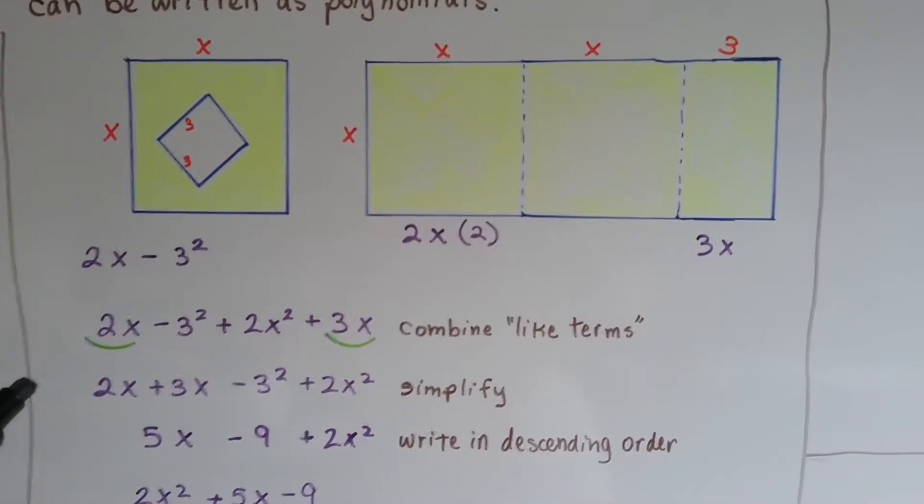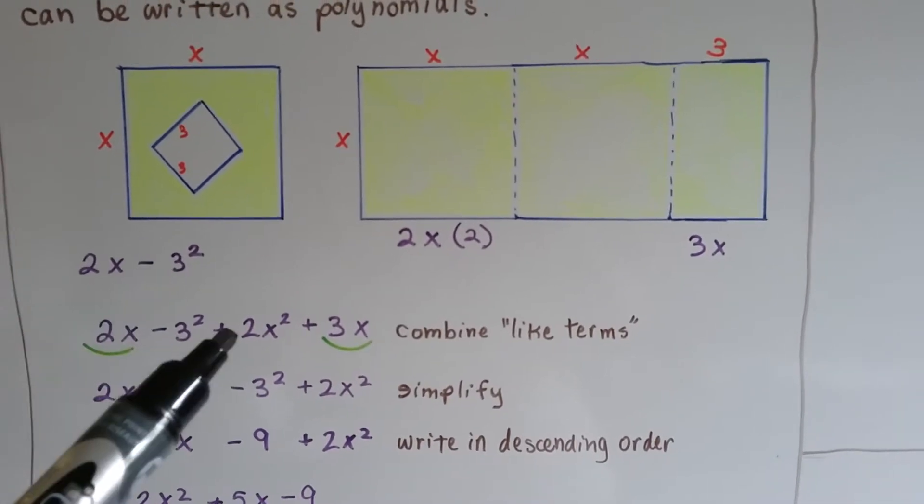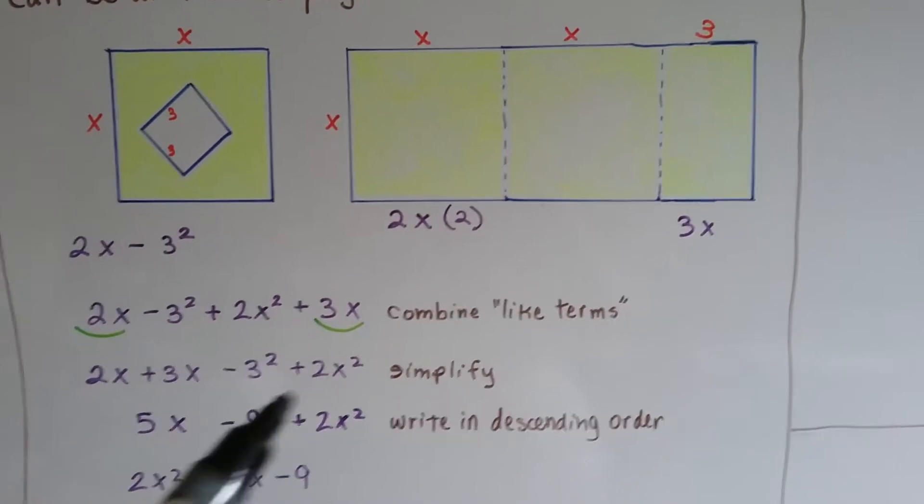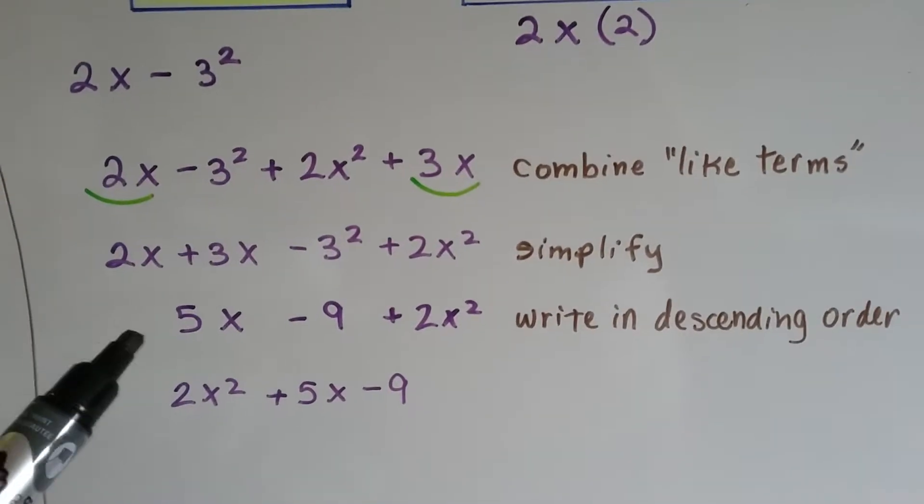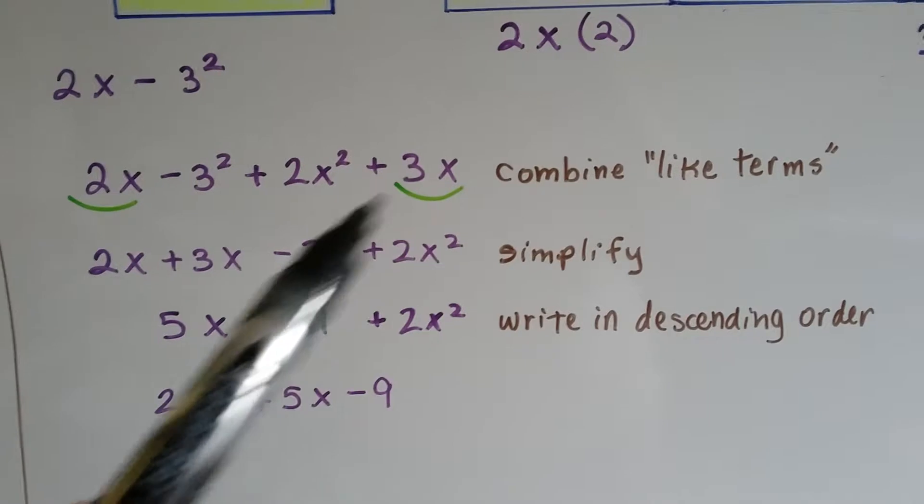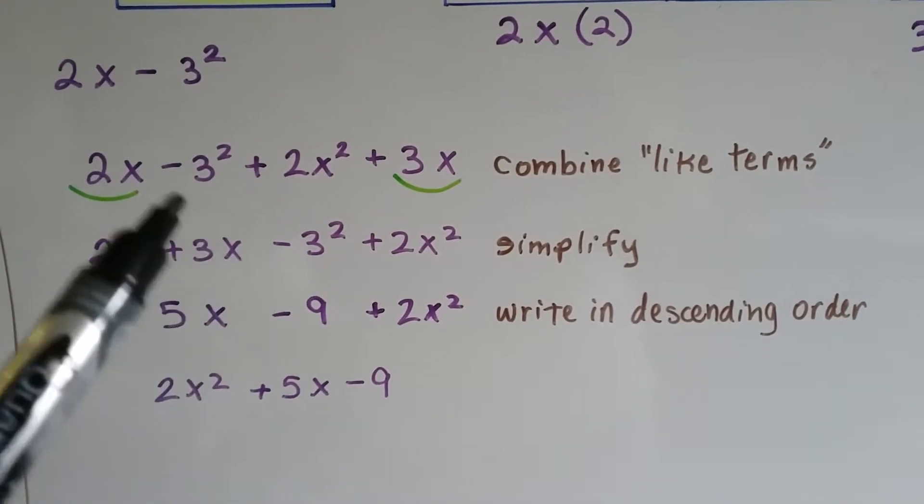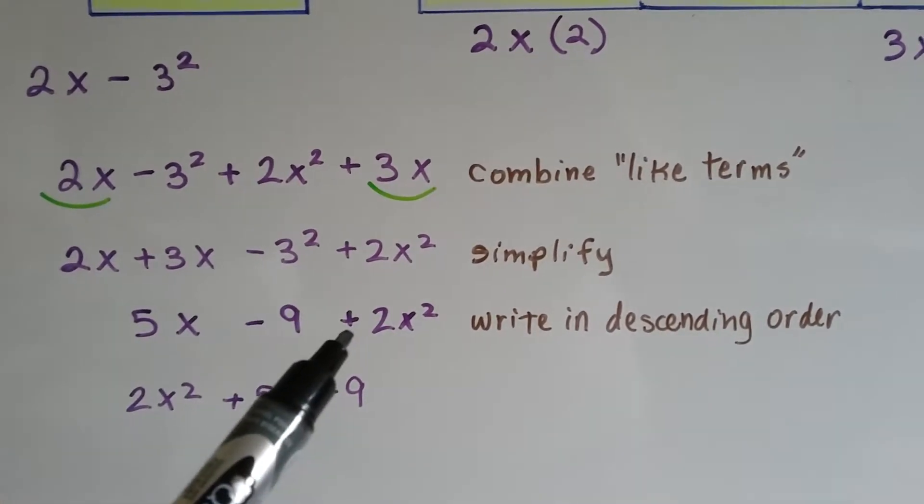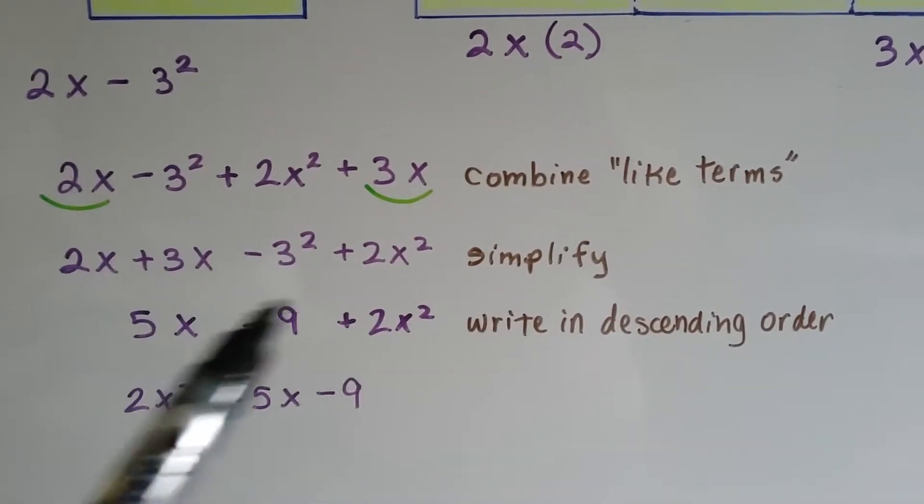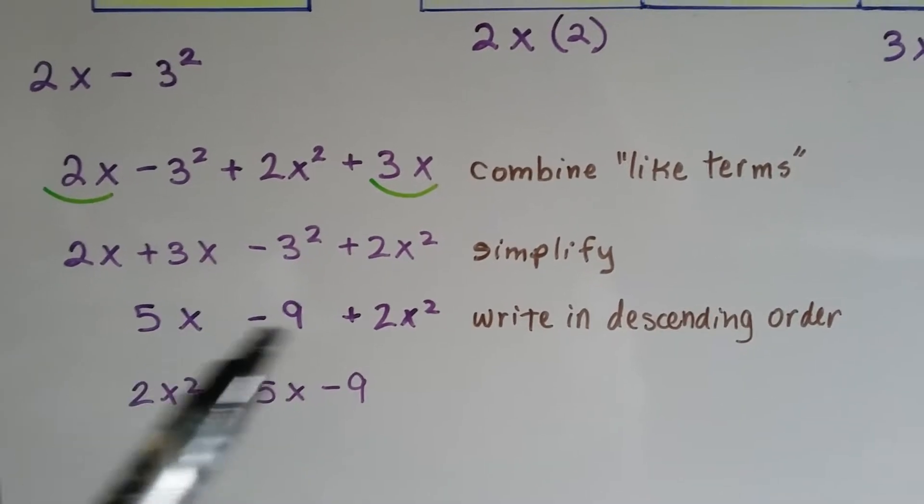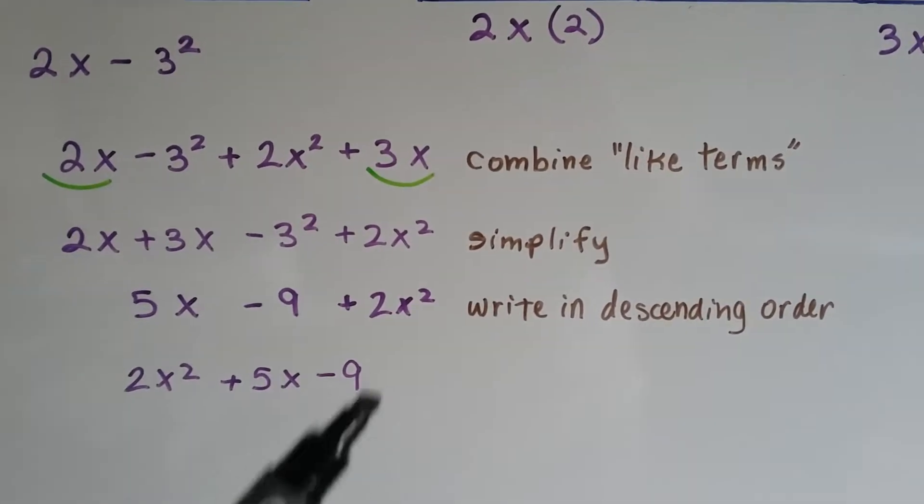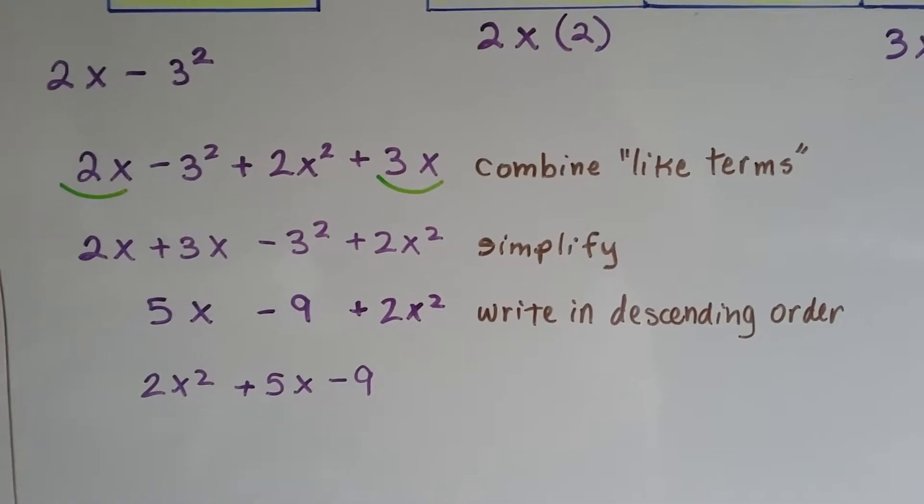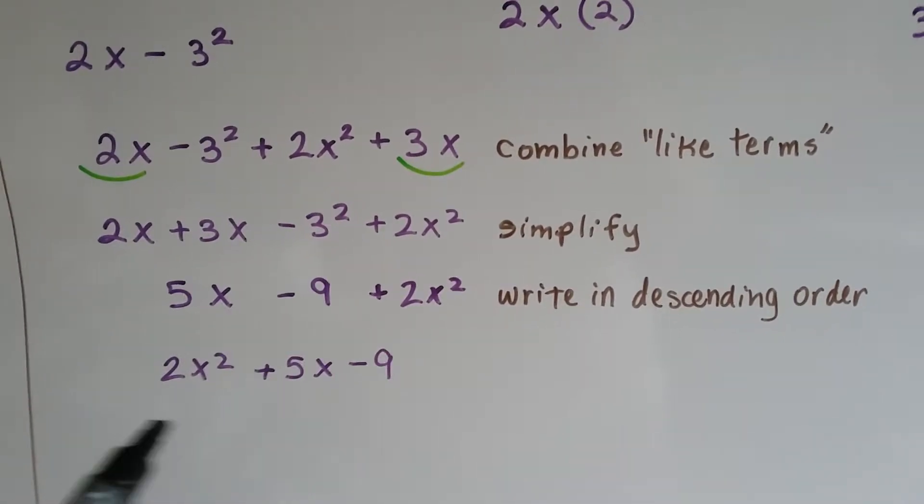Now we can combine the like terms. We've got 2x minus 3 squared, we've got 2x squared because we've got 2 of these 2x's, and we've got 3x that we're adding. So now we can simplify. This 2x and that 3x make 5x. We're going to take away this negative 3 squared, 3 squared is 9, so we're going to take away 9. And then we've got this 2x squared that doesn't have any other like terms, so it's just going to come for the ride. But we need to write them in descending order from the most exponents to the least. So 2x squared is going to be first, then this x because it's to the first power, and then the 9. That's how we would write it in descending order.